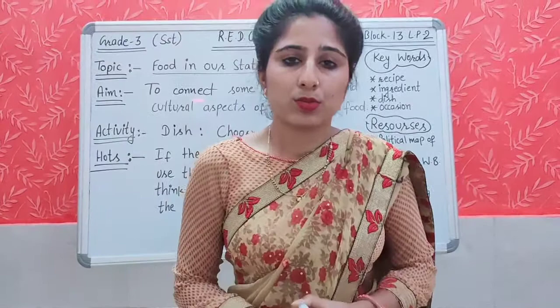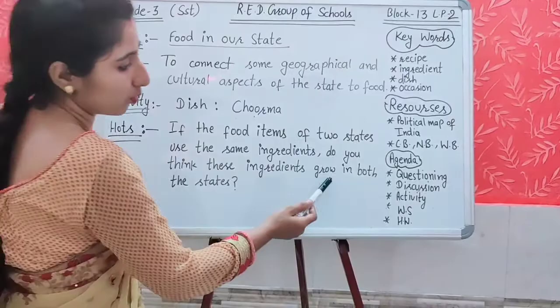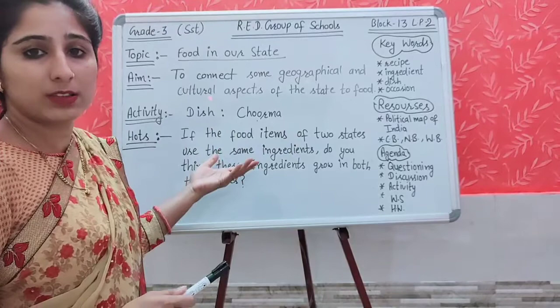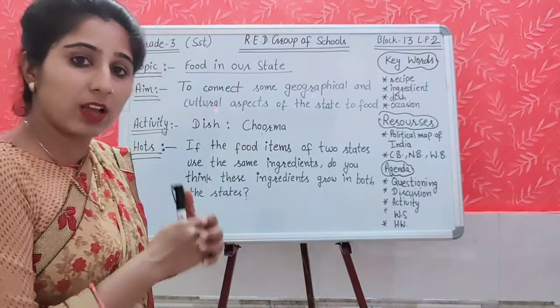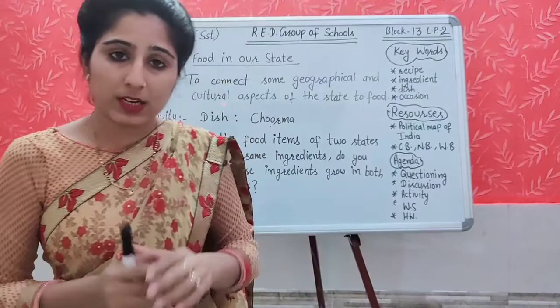Now it is time for the higher order thinking question. If the food items of two states use the same ingredients, do you think those ingredients grow in both the states? We are talking about Churma — which ingredient do we use in Churma? We use wheat flour.